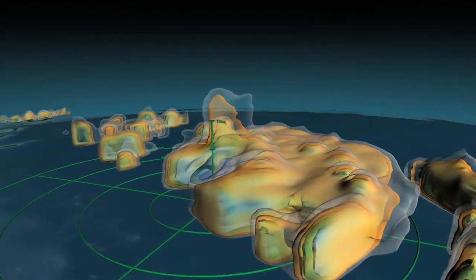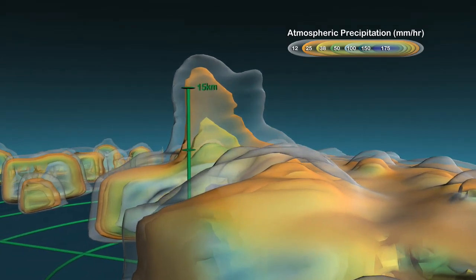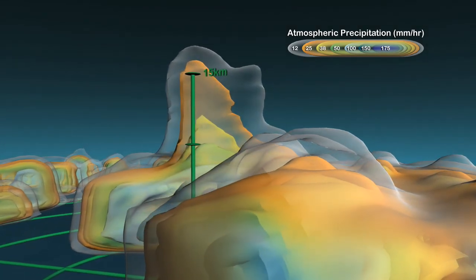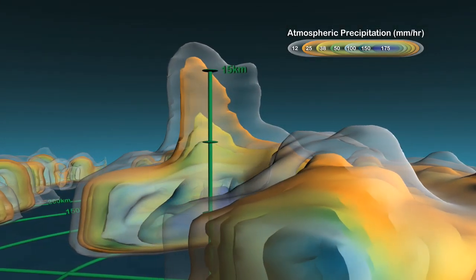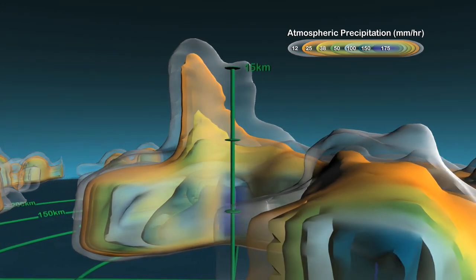Using TRMM measurements, scientists identified a dramatic feature in the structure of Hurricane Bonnie. Towering rain clouds close to the eyewall nearly reached the stratosphere.